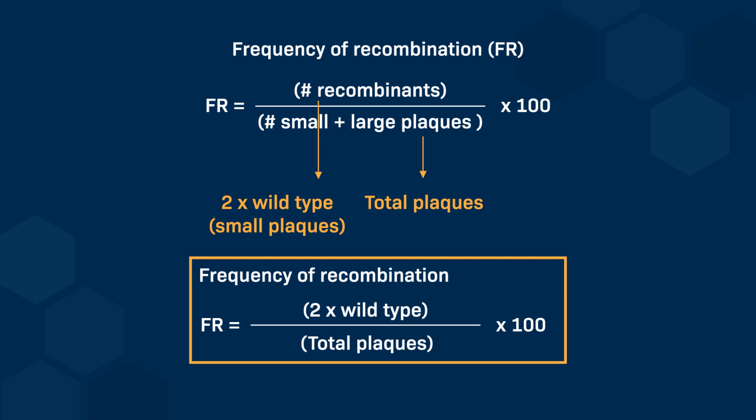So, we would need to plate a lot of bacteriophages. Too many bacteriophages on one plate make all the plaques too close together, making it hard to count the small plaques.